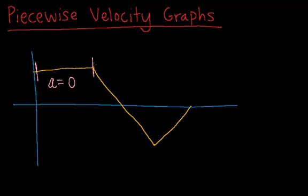Here, between this marker and this marker, our velocity is positive, so v equals positive, and over here v is also positive.